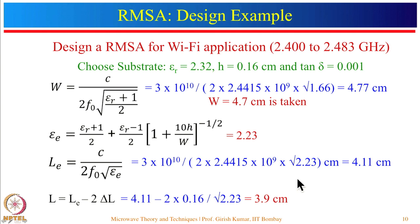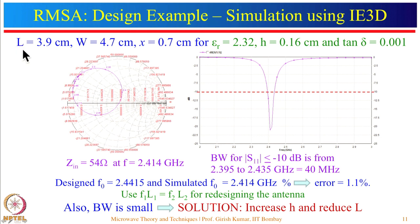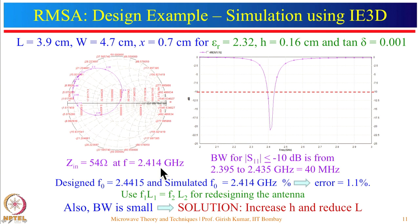Simulation was done using IE3D software. The input impedance and reflection coefficient plots show Z_n = 54 ohm at f = 2.414 GHz, which is slightly different from the design frequency. The bandwidth for S11 < −10 dB is from 2.395 to 2.435 GHz, equal to 40 MHz. The desired bandwidth is much more than 40 MHz, so we need to improve the design.